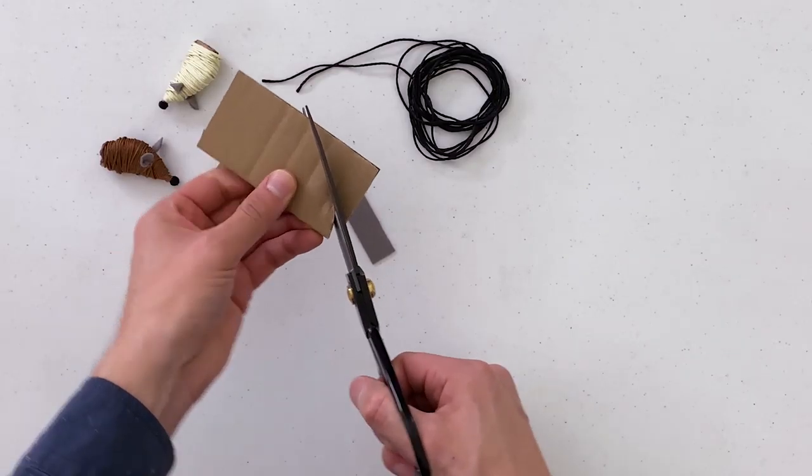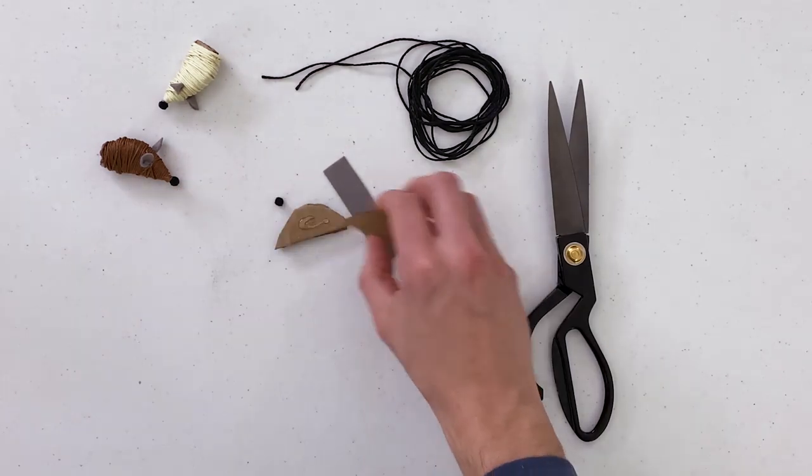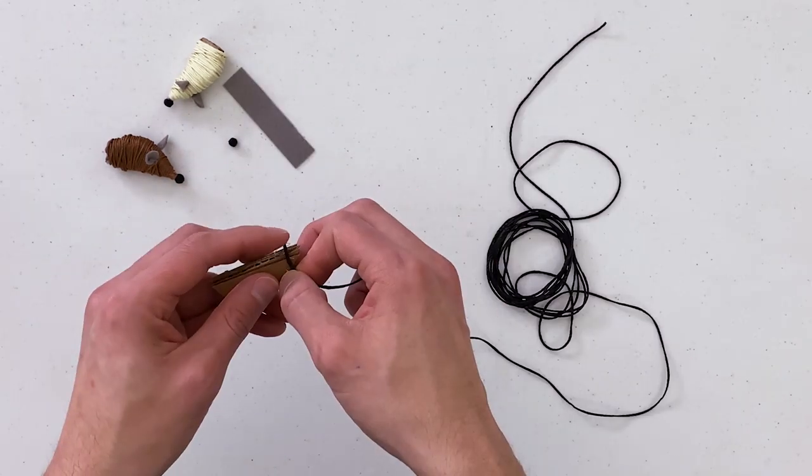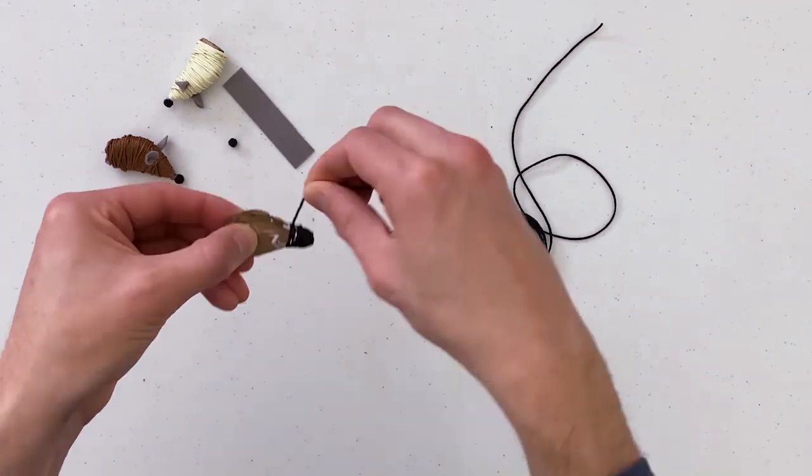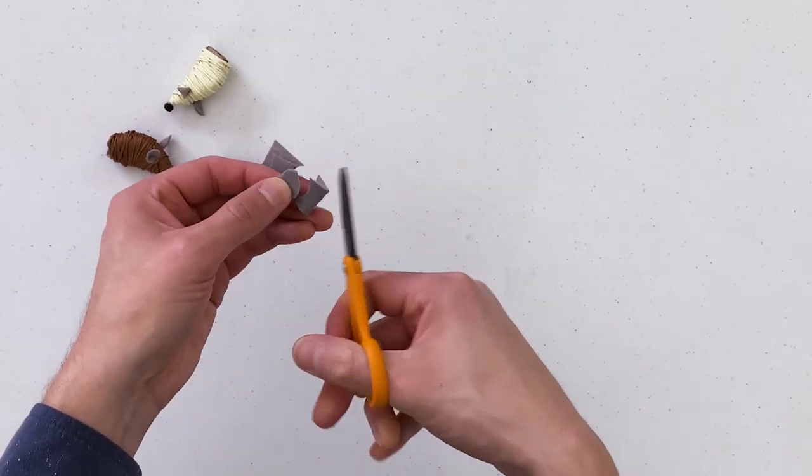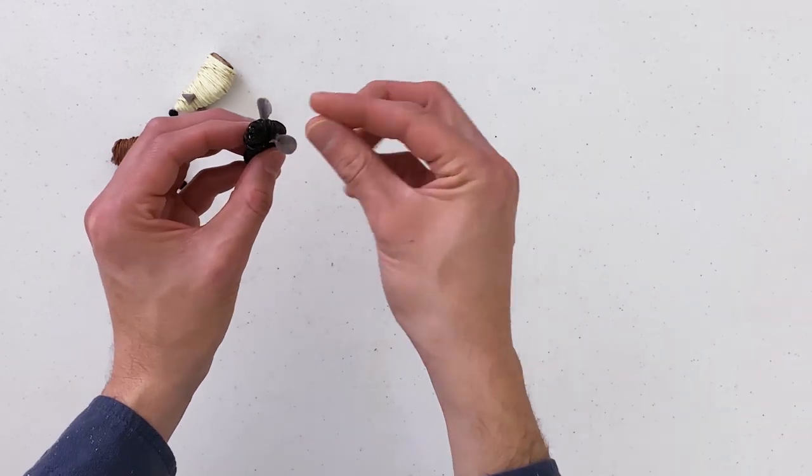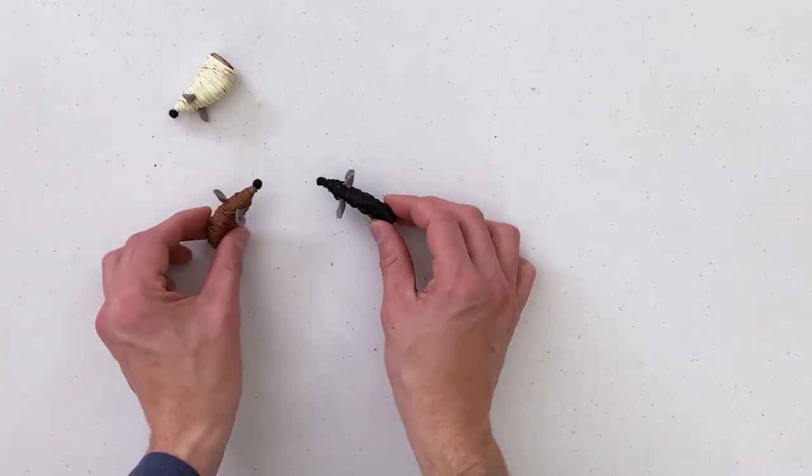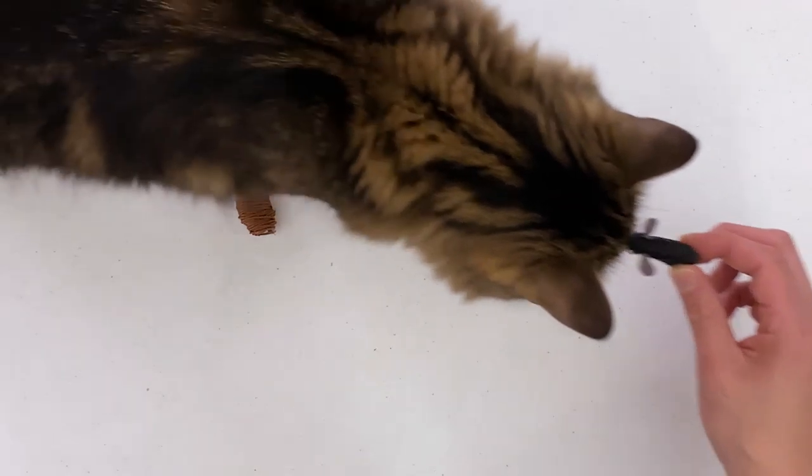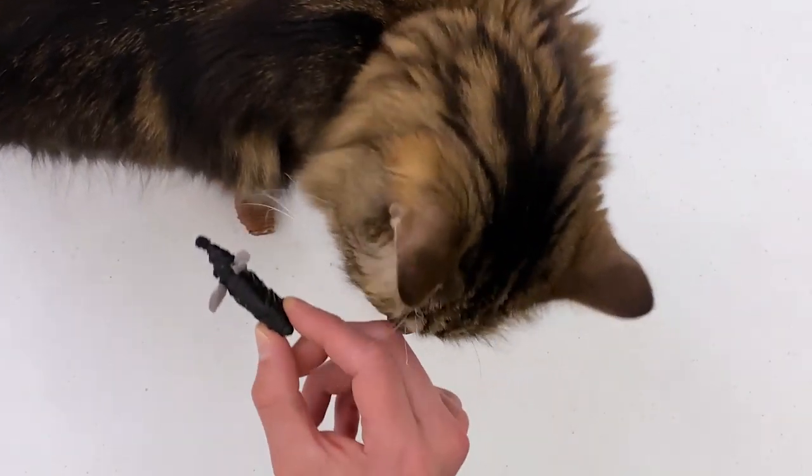Well, since this is Whack-A-Rat, we need some rats. Yes, try saying that three times fast. Whack-A-Rat, Whack-A-Rat. I can't. We're going to be making our rats out of cardboard, of course, and some string. I think he's going to love this. I don't think he's going to love it. I don't think he's going to touch it.